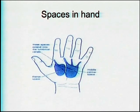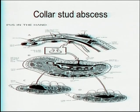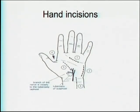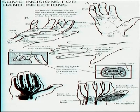Coming to the spaces in the hand — there are web space infections and deeper infections. The mid-palmar space and thenar space are in direct contact with the radial and ulnar bursa. A collar-stud abscess can develop and spread directly into the radial and ulnar bursa. These spaces need proper drainage using specific safe incisions, which can also be used for drainage of different spaces in the finger and in the radial and ulnar bursa.